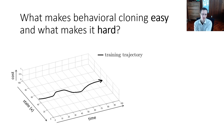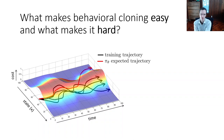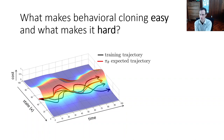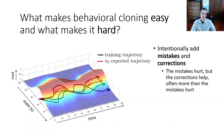What makes behavioral cloning easy and what makes it hard? If you have very perfect data, accumulating errors are a big problem, because as soon as you make even a small mistake, you're outside of that distribution of perfect data. But if you actually already have a bunch of mistakes in your dataset and corrections for those mistakes, then when you make a small mistake, you'll be in a state similar to other mistakes you've seen, and the labels in that portion of the dataset will tell you how to correct that mistake. You could intentionally add mistakes and corrections during data collection. The mistakes will dilute the training set, but the corrections will help, and often the corrections help more than the mistakes hurt.